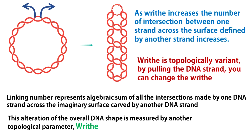Remember that linking number does not change unless the DNA chain breaks — we are not breaking any DNA chain here. So the total number of times one strand intersects the surface defined by another strand remains the same. If intersection is forcibly reduced at some region, somewhere else it needs to be compensated. As a result, the double helix of the distant regions winds upon itself — so if you try to reduce the twist, the overall shape of the circular DNA changes. This alteration of the overall DNA shape is measured by another topological parameter: writhe.